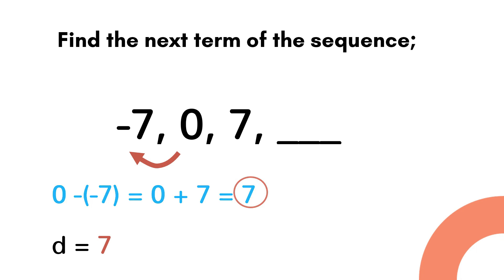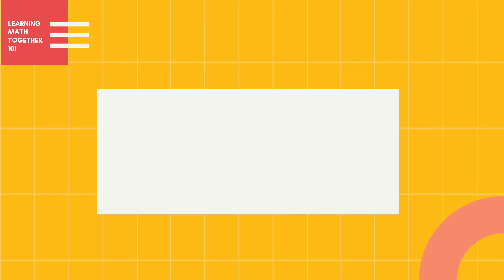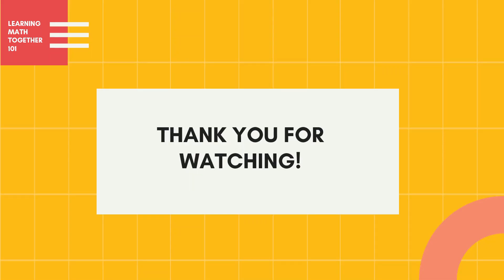We just add 7 to the last term given: 7 plus 7 is equal to 14. Thus the next term of the given sequence is 14. That's all for today, thank you for watching, I hope you learned something.